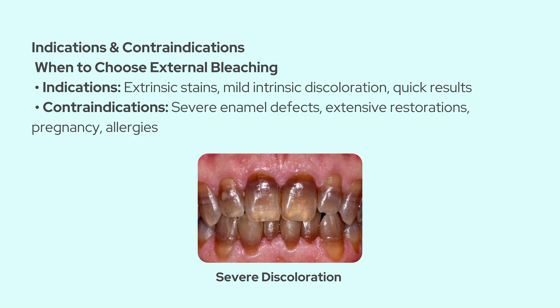So when do we actually decide to use external in-office bleaching? We usually go for it when the patient has extrinsic discoloration that doesn't respond to polishing, or mild to moderate intrinsic discoloration like age-related yellowing. It's also great for patients who want immediate results compared to at-home trays. But we have to be careful because it's contraindicated in cases with severe enamel defects or hypoplasia, extensive restorations on the front teeth since composite or ceramic won't bleach, pregnant or lactating women due to safety concerns, and anyone with allergies to the bleaching agents.